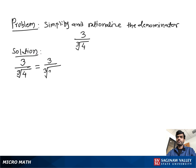To remove the cube root, we need to make the denominator a perfect cube. To do that, we need three factors of 2. So we multiply cube root 2 to both the numerator and denominator, giving us 3 times cube root 2 over cube root of 2 times 2 times 2.